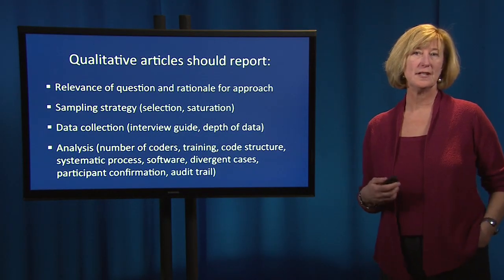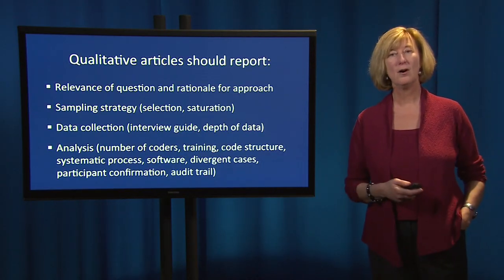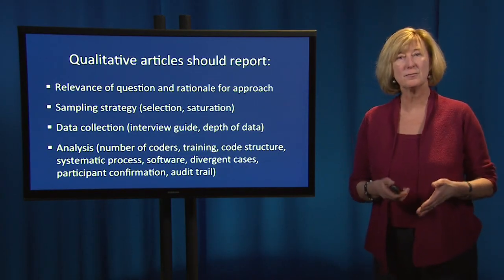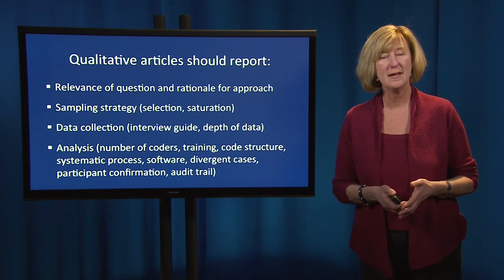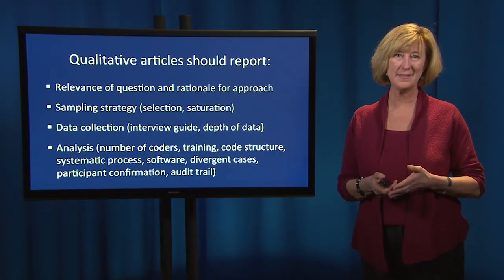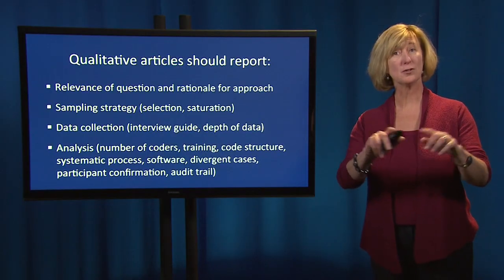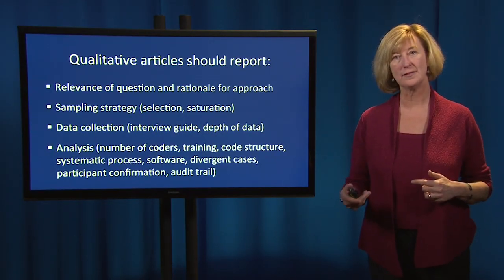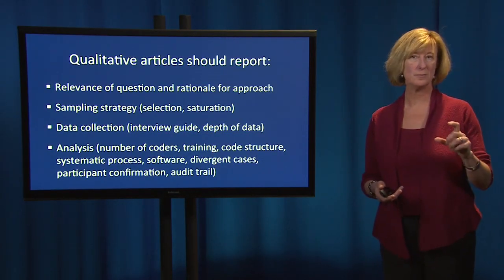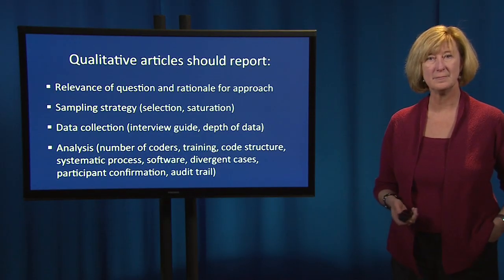When a researcher is reporting a qualitative study, we should be looking for articles to include a whole host of dimensions of the research. In this series we've addressed many of these. First, the relevance of the question and the rationale for the approach — this gets to the issue of conceptualizing a research study. Why qualitative methods? We need to be very clear in the reporting in our articles why we chose a qualitative approach, and within that, why, for instance, we're doing a focus group study as opposed to an ethnographic observational study. A qualitative article should be very explicit about the rationale for the defined methodologic approach.